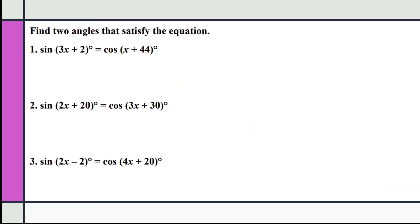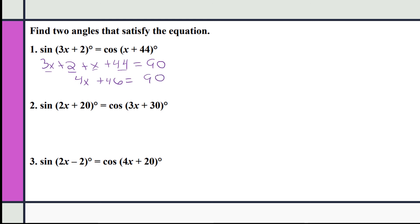For the next example, find two angles that satisfy: sine of (3x + 2) equals cosine of (x + 44). Since these are complementary, we set up: (3x + 2) + (x + 44) = 90. Combining like terms: 4x + 46 = 90. Subtracting 46 gives 4x = 44, so dividing by 4 gives x = 11.